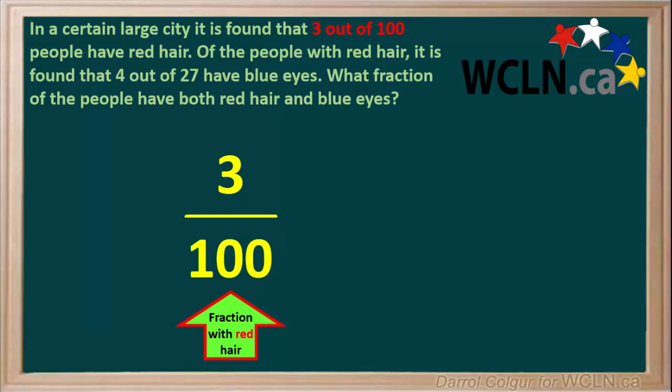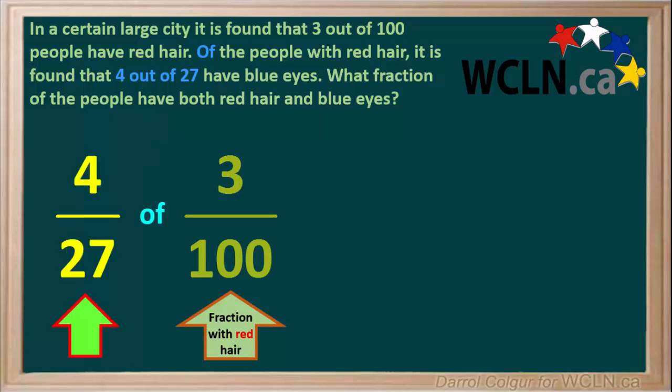Because 3 out of 100 people have red hair, we can write the fraction 3 over 100 here. We're also told that 4 27ths of the people with red hair have blue eyes. So we'll write down 4 27ths of 3 100ths.